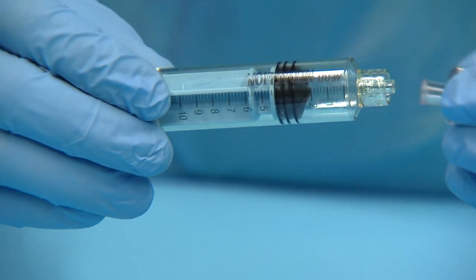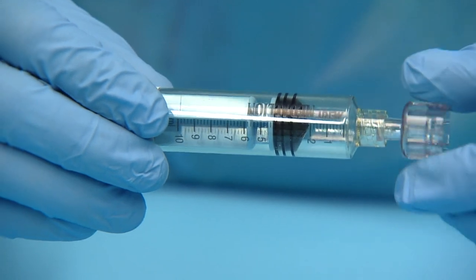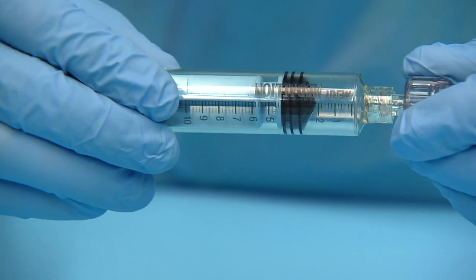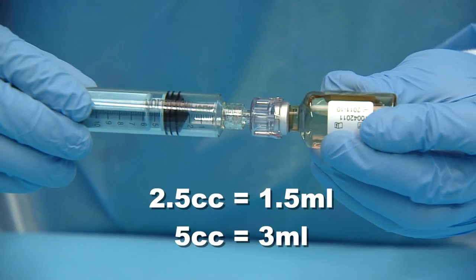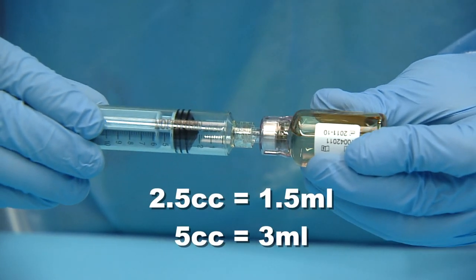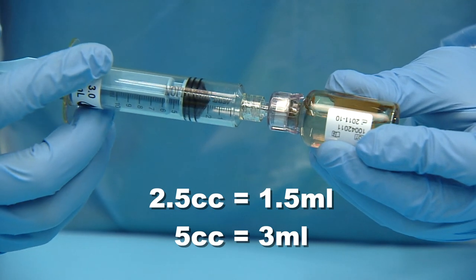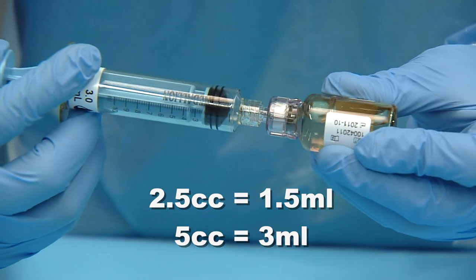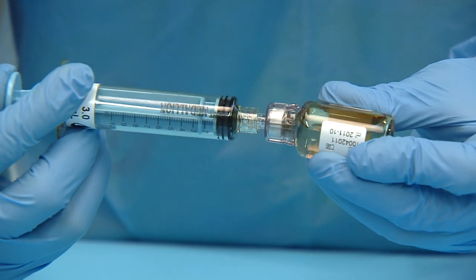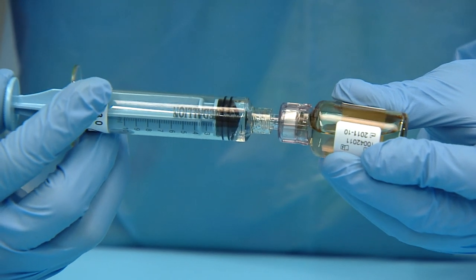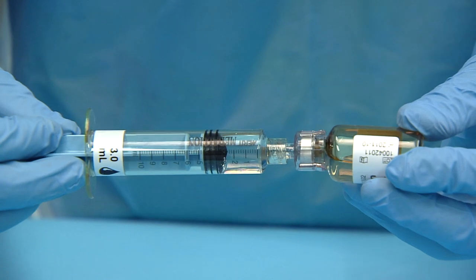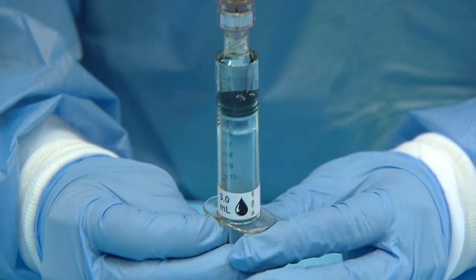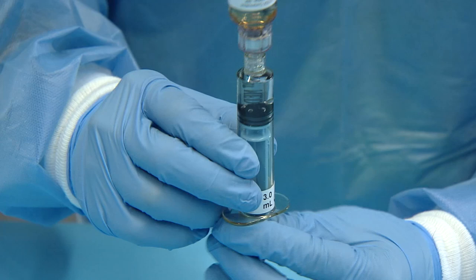Withdraw the appropriate amount of saline given to you on the package using the supplied syringe and vial adapter. When withdrawing the saline, be sure to measure it using the tip of the plunger and make sure there are no air bubbles by retracting and pushing the saline in and out until air is gone.